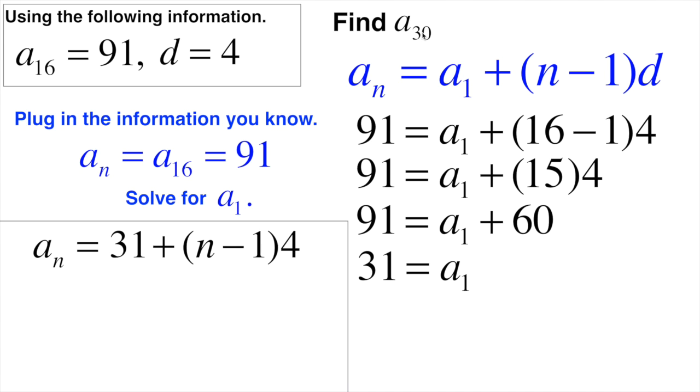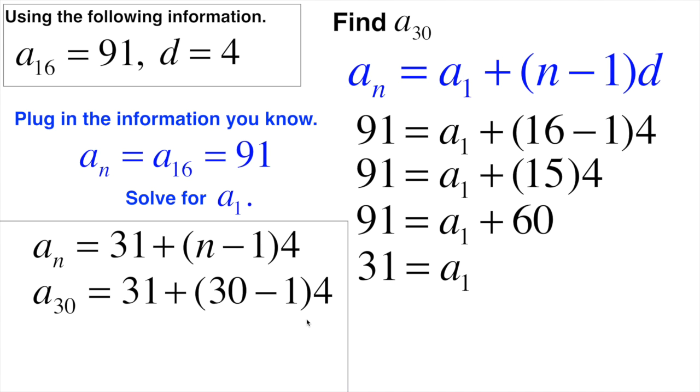Now all I'm going to do in order to find the 30th term is just plug in 30 right here and here and simplify it. So I plug in 30 here and here. Then again, I just simplify what's on the right-hand side. 30 minus 1 is 29. 29 times 4 should give you 116. Then 116 plus 31 would be 147. So a₃₀, my 30th term in this sequence, is 147.